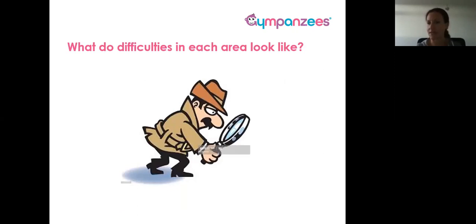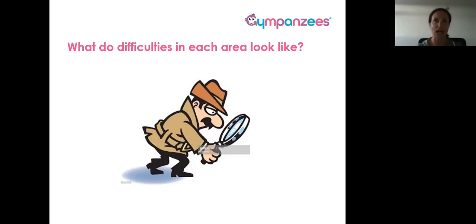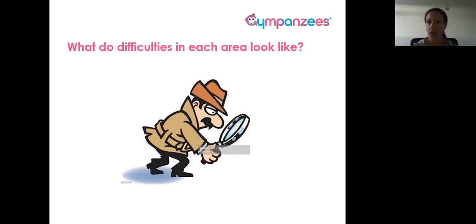We're now going to look at what difficulties may look like if a child over-responds or under-responds in all of the sensory systems. I always try and make a comparison to playing a detective, because as a parent or caregiver this is essentially what you are needing to do throughout your entire day. You're trying to understand and unpick what behaviors you're seeing — what your child was trying to communicate, what happened before that they had to get away from a stimulus, or perhaps they were seeking it out and needed more of it.